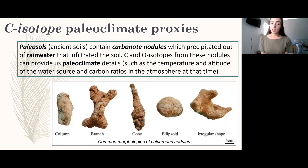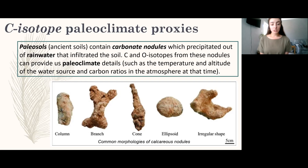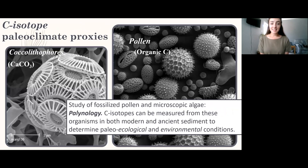Another paleoclimate proxy using carbon isotope ratios comes from carbonate nodules. These are carbonate materials not biologically formed but rather formed when rainwater or groundwater infiltrating soils rich in soluble minerals such as calcium carbonate becomes evaporated or transported, leaving behind precipitated nodules of calcium carbonate minerals. These nodules are preserved in paleosols - ancient fossilized soils. We can measure the carbon and oxygen isotope ratios within these nodules to understand the rain or groundwater that formed them, as well as the atmospheric CO₂ signature.